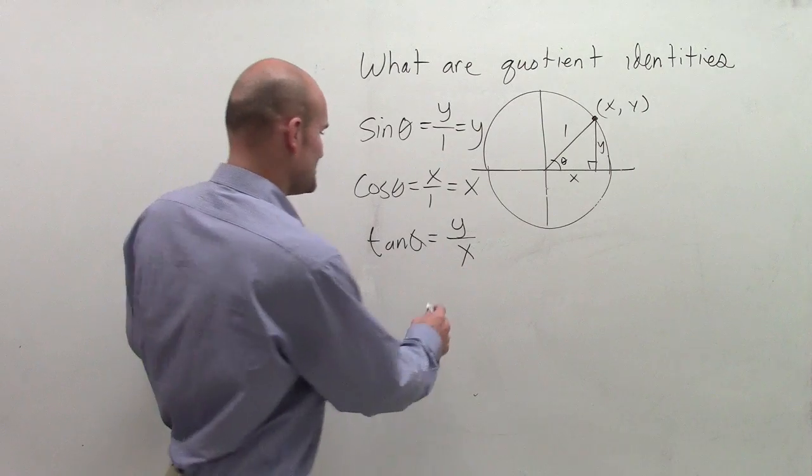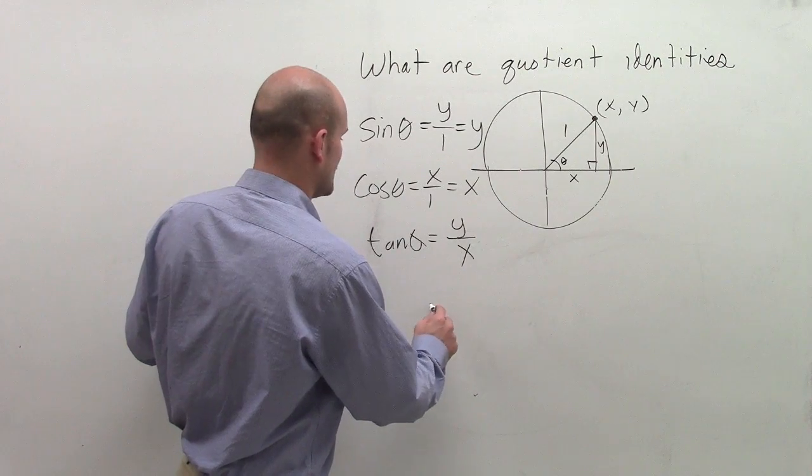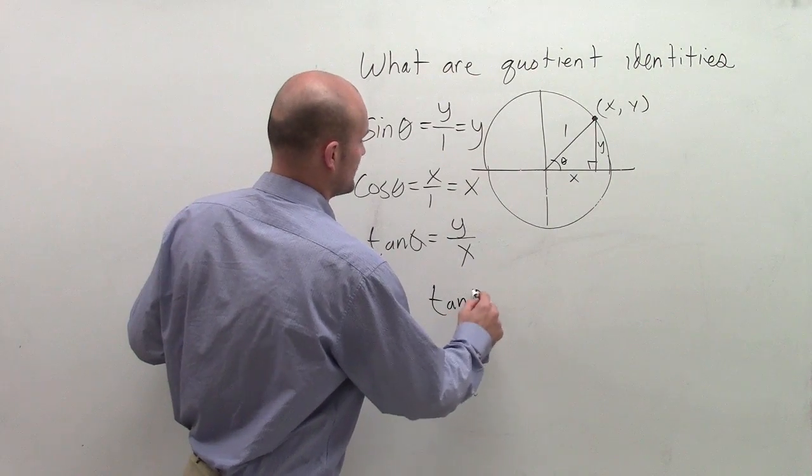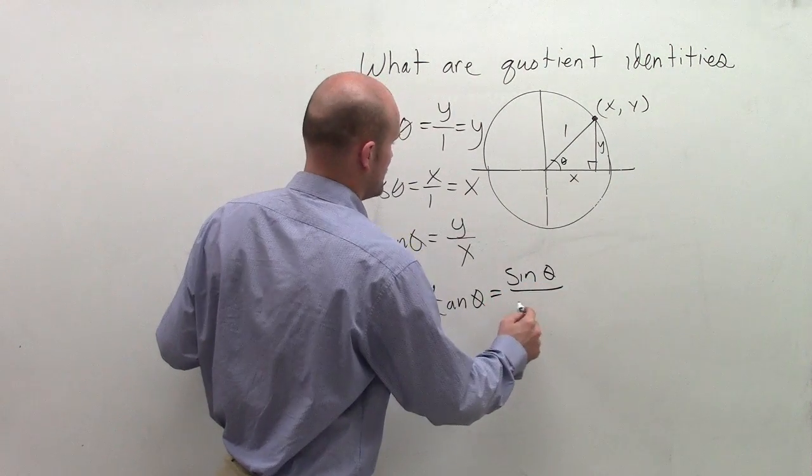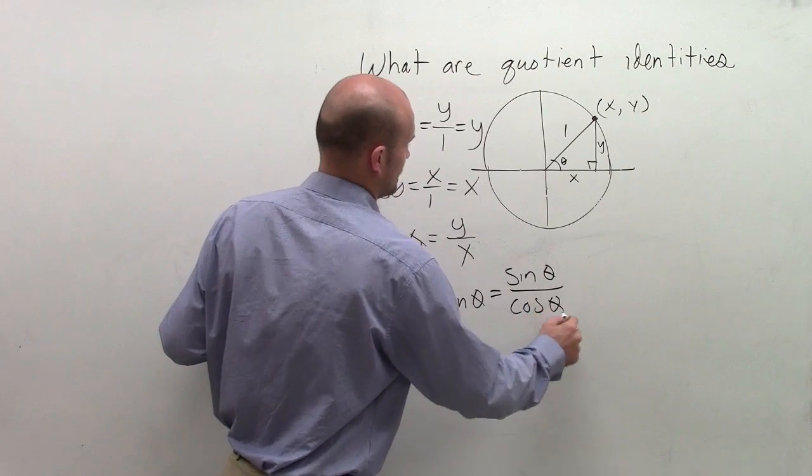Yeah, it is. That's your quotient identity. So tangent of theta equals sine of theta divided by cosine of theta.